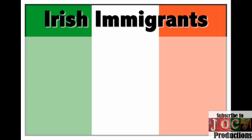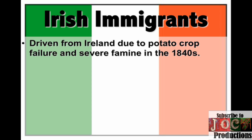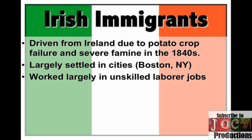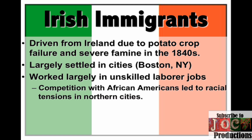In the 1840s all the way up until the 1870s, you have a huge amount of Irish immigrants coming into the country. They're leaving Ireland because of a potato crop failure and severe famine, especially in the 1840s. They're largely going to settle in cities like New York and Boston, working in unskilled laborer-type jobs. As a result, there's going to be tremendous competition with African Americans, leading to racial tensions in northern cities.